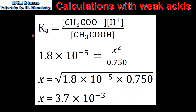Next we write our expression for Ka. We have the concentration of the ethanoate ion and the hydronium ion in the numerator, and the concentration of the ethanoic acid in the denominator. Substituting in our values, the concentration of the ethanoate ion multiplied by the concentration of the hydronium ion is X squared, and the concentration of the ethanoic acid is 0.750.